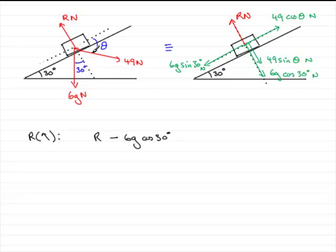And then the component of the 49 Newtons acting into the plane, because it doesn't contain the angle, is going to be 49 sin θ, as you can see over here. So it's going to be minus 49 sin θ.